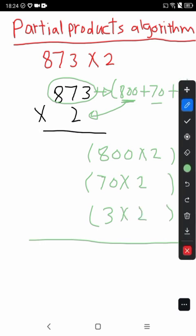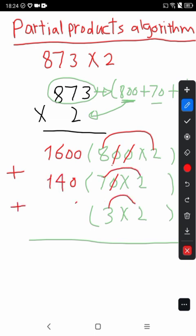Now we will find the answer. 800 times 2: cancel 2 zeros and write 2 zeros, 8 times 2 is 16. Plus, cancel the zero, write zero and multiply 7 to get 14. Plus, 3 times 2 is 6.